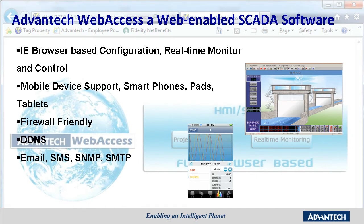Web Access is also the first SCADA software to support smart mobile devices like the iPhone, Android phones, and tablets. Web Access is firewall-friendly and can connect to the SCADA server without any problem. The web client can always connect to its server with a configurable TCP port. To overcome the limited IP address space problem, Web Access also supports DDNS. In a multiple-layer SCADA structure, the lower-level SCADA nodes can work in a local IP environment.